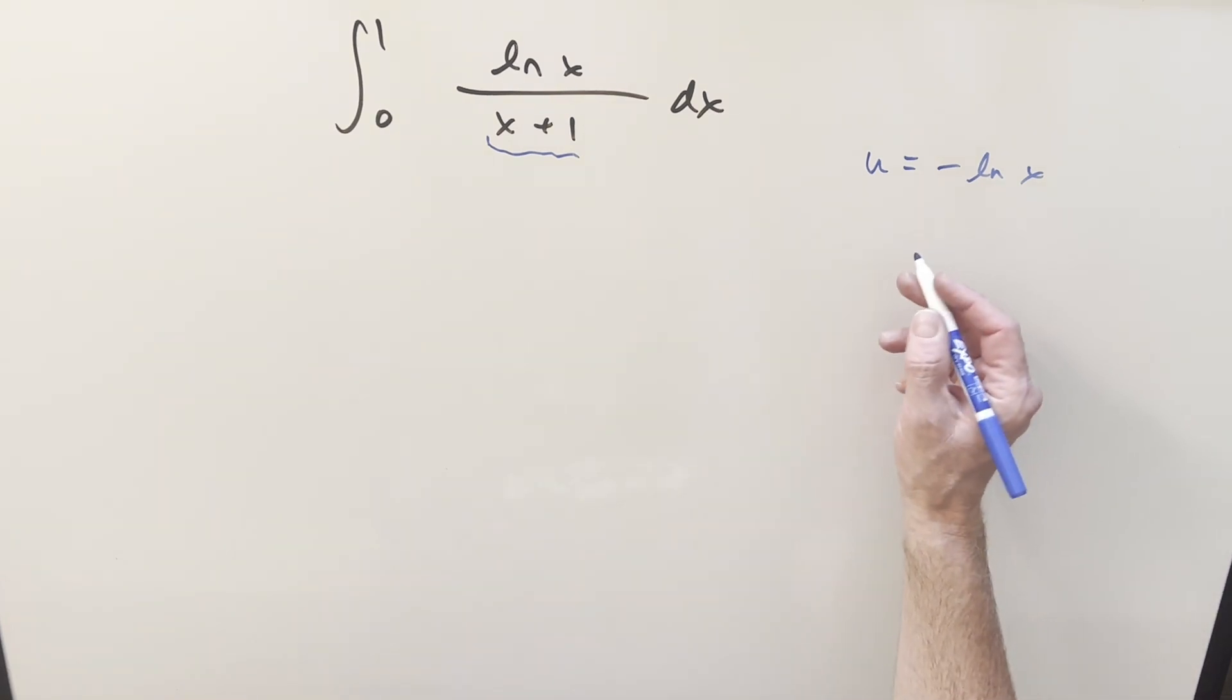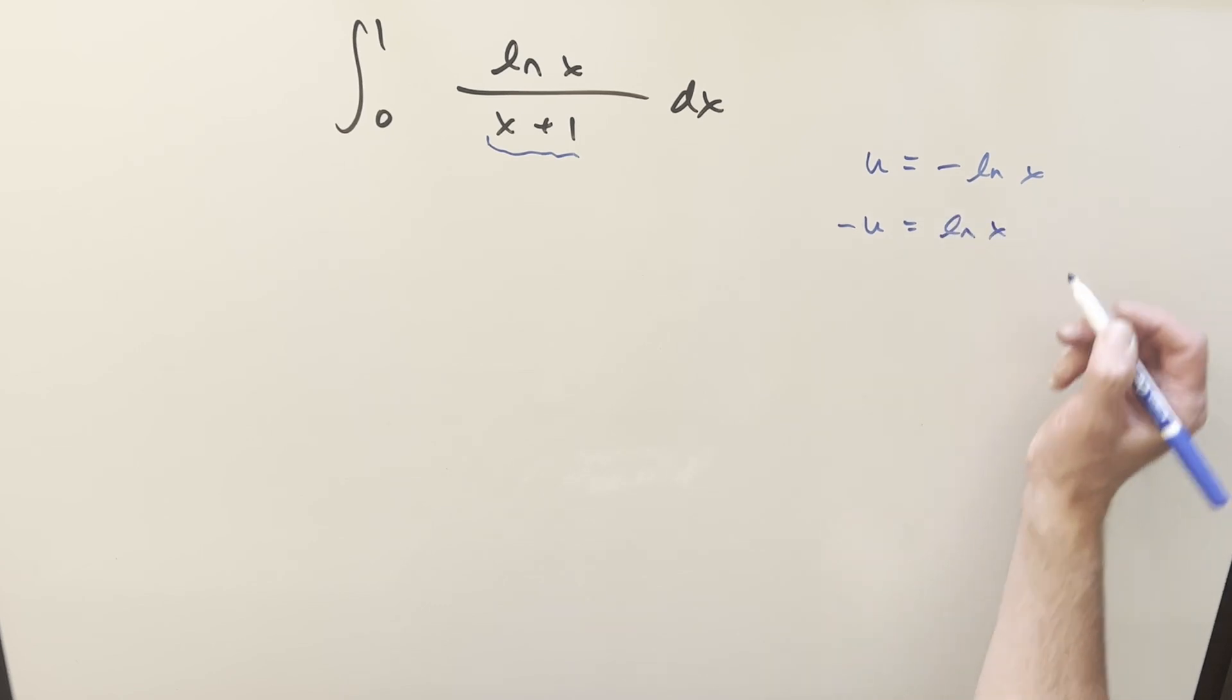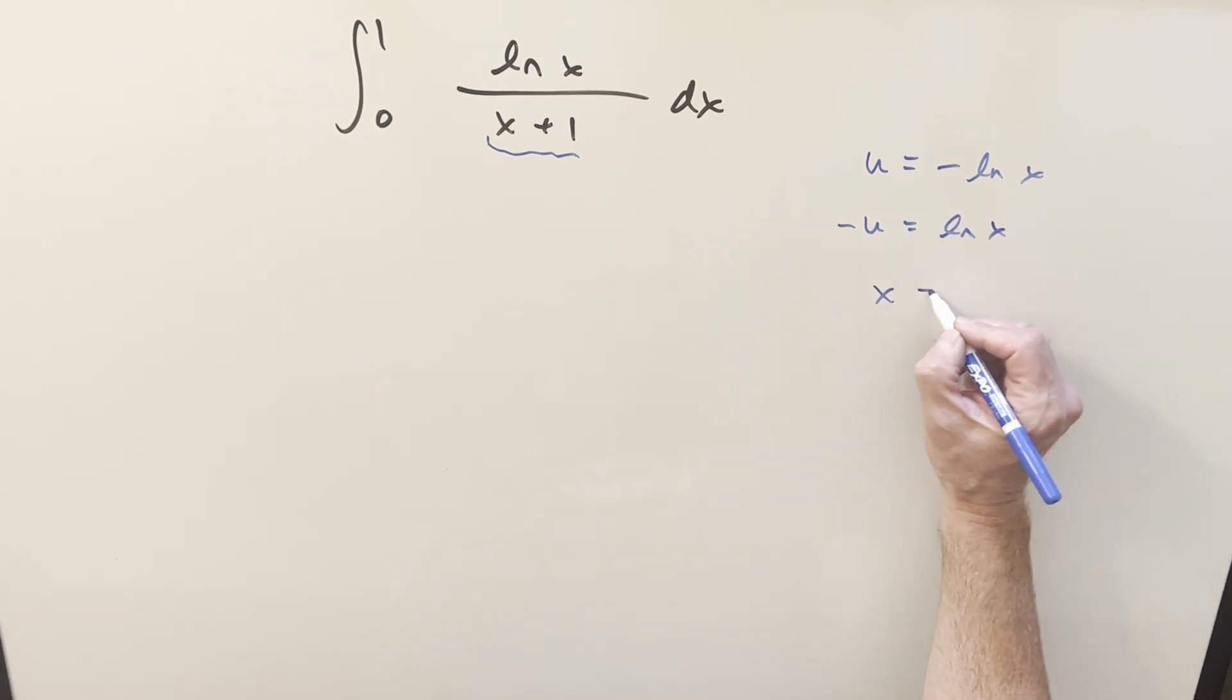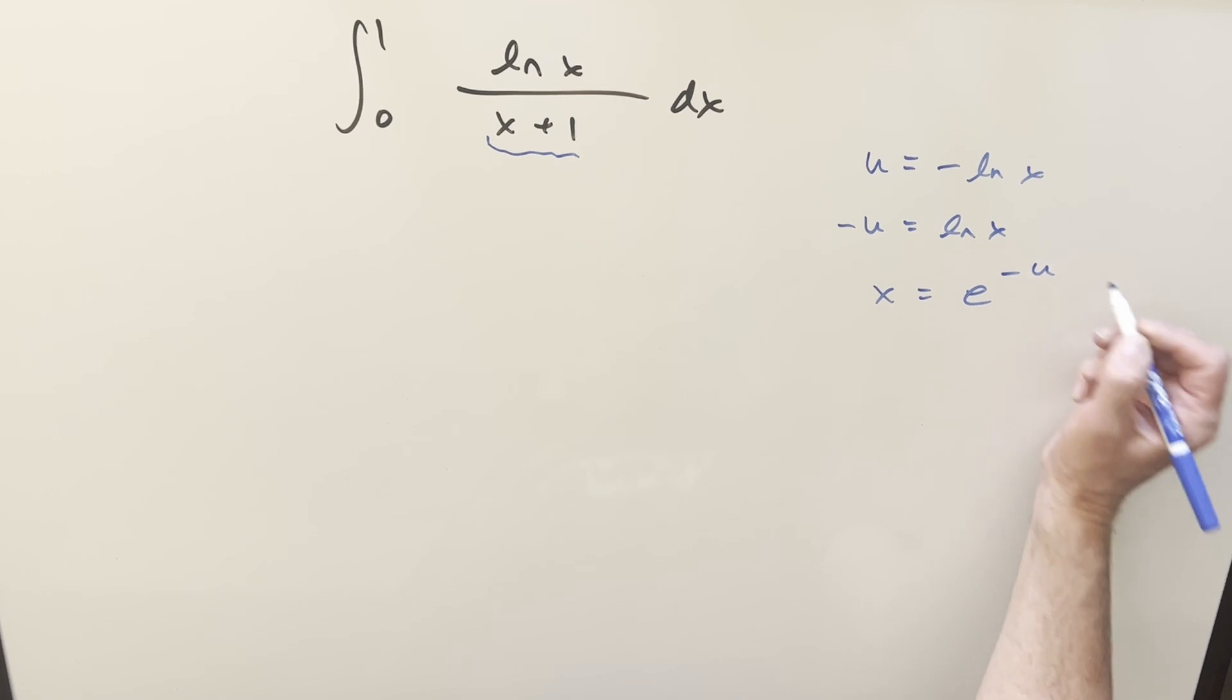But first with this substitution, let's solve for x. We've got this minus sign, so we could write this as minus u equals ln x, so that when we solve for x we have x equal to e minus u. Take a derivative and then for our dx value we just have minus e minus u du.